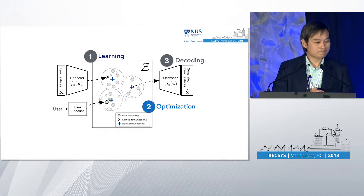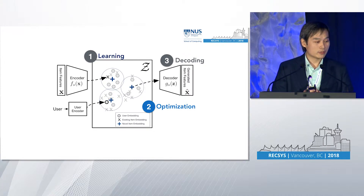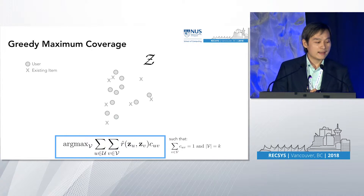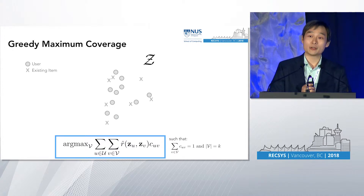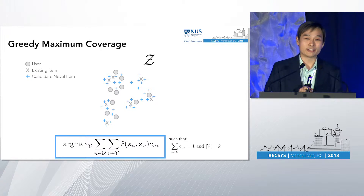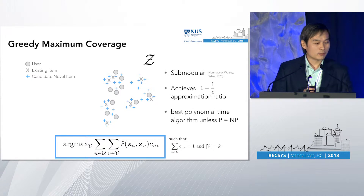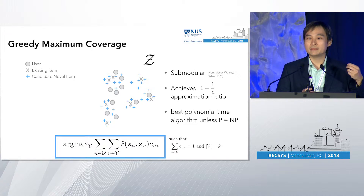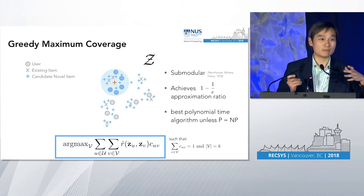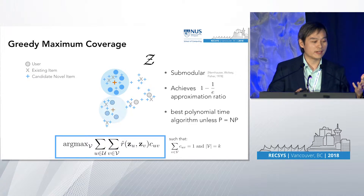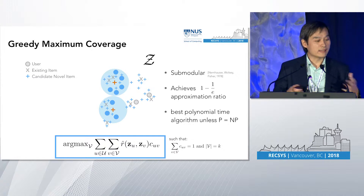The second step is optimization. We're trying to do maximum cover. First, we discretize the space — you can do that simply by sampling, using the encoder. The problem is NP-hard but also submodular. Because it's submodular, we can apply a greedy maximum coverage algorithm, which achieves a very nice approximation ratio and is the best polynomial-time algorithm unless P equals NP. The algorithm is very simple: pick the item that covers the most people, take those people away, then find the next item that covers the next largest pool, and so on. If we pick K equals three, in this case we've covered all the people.